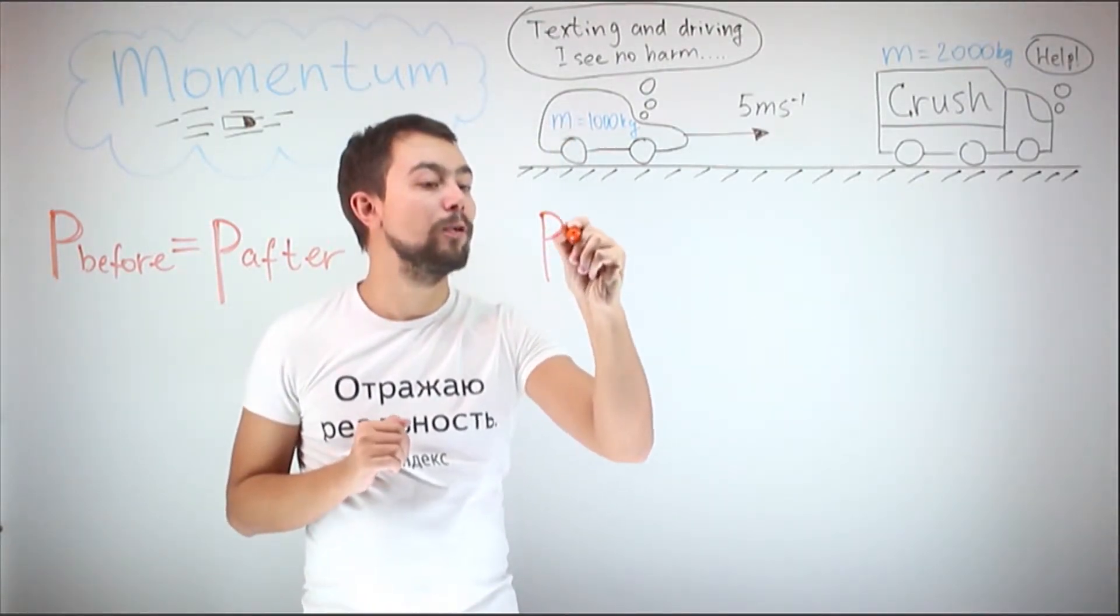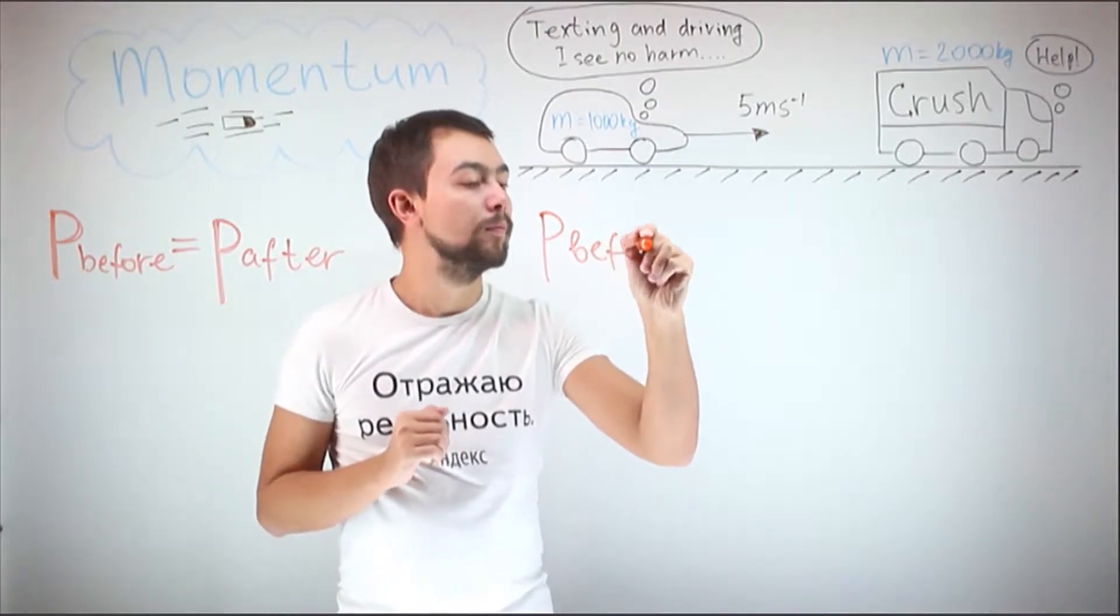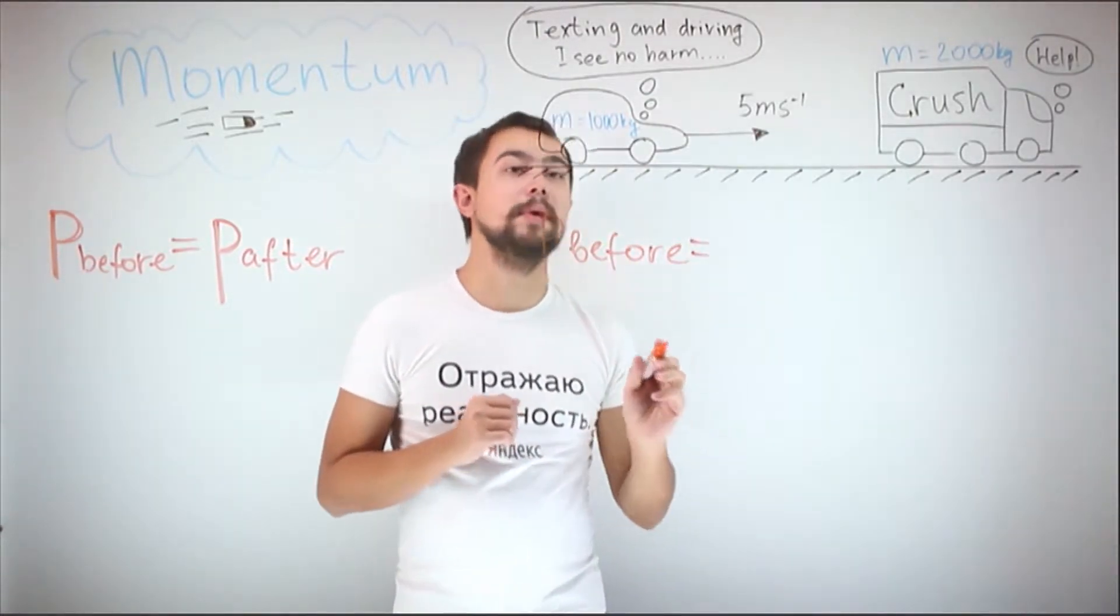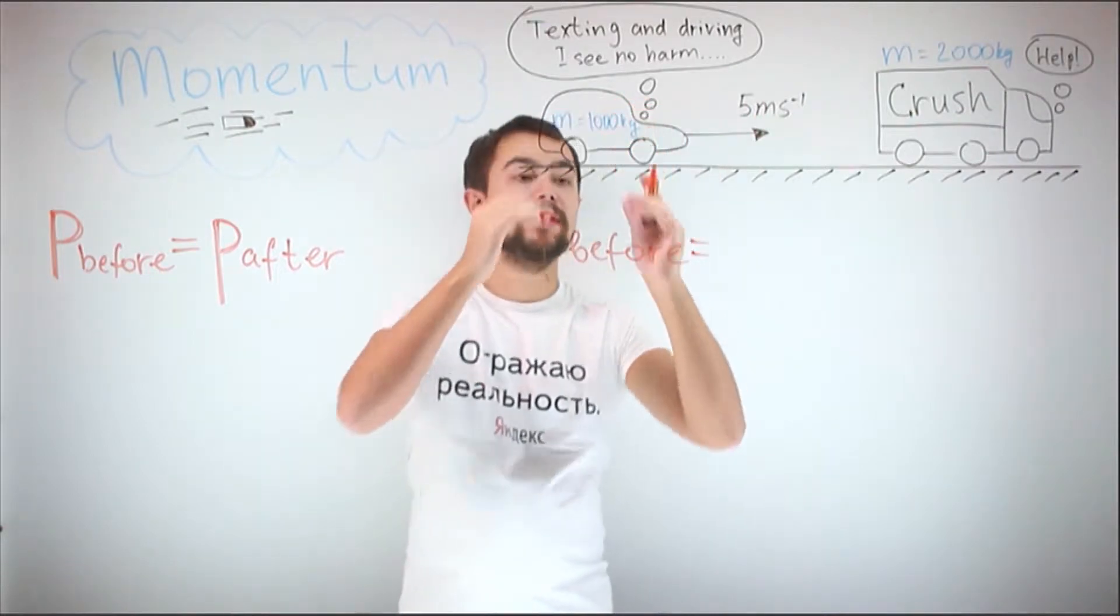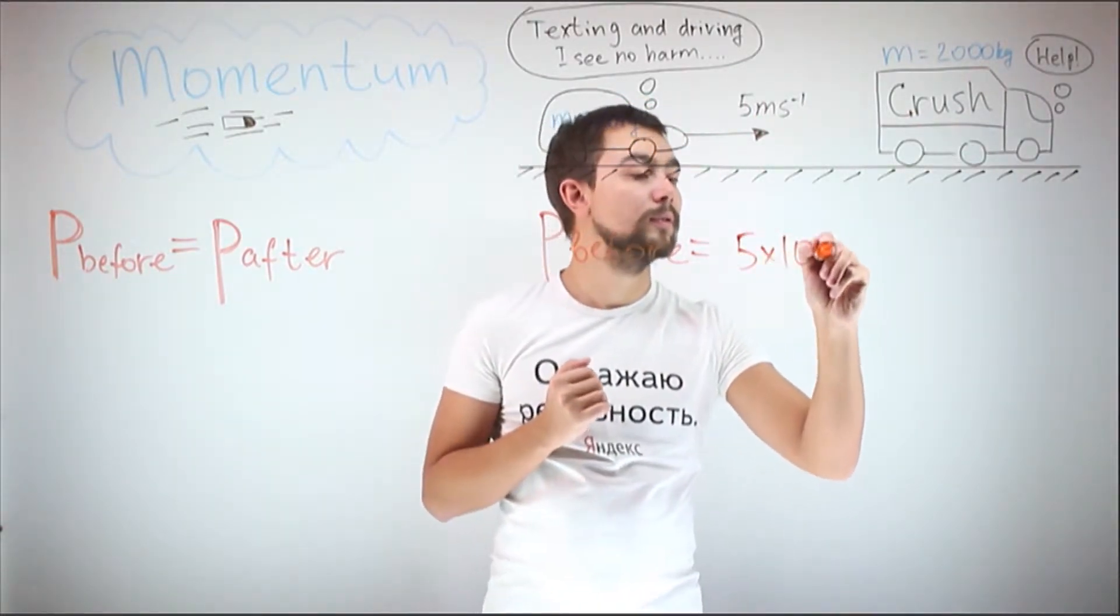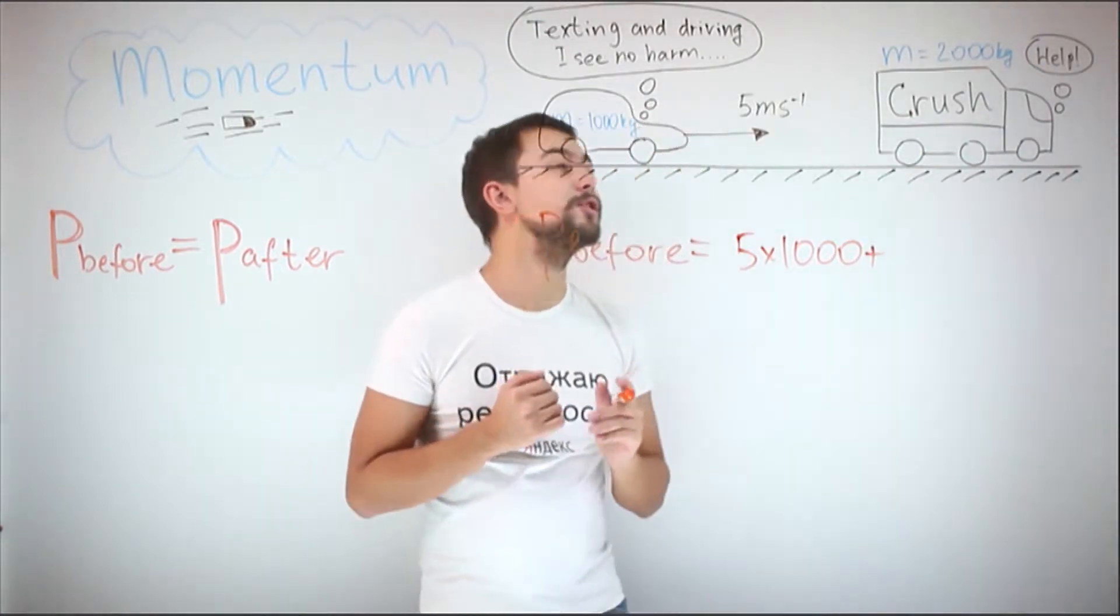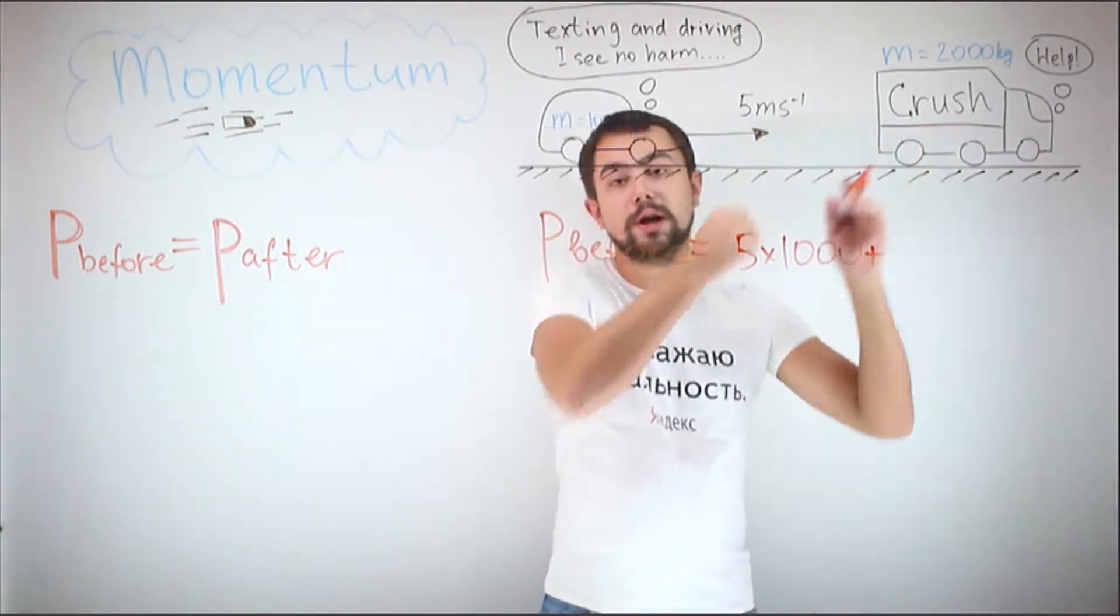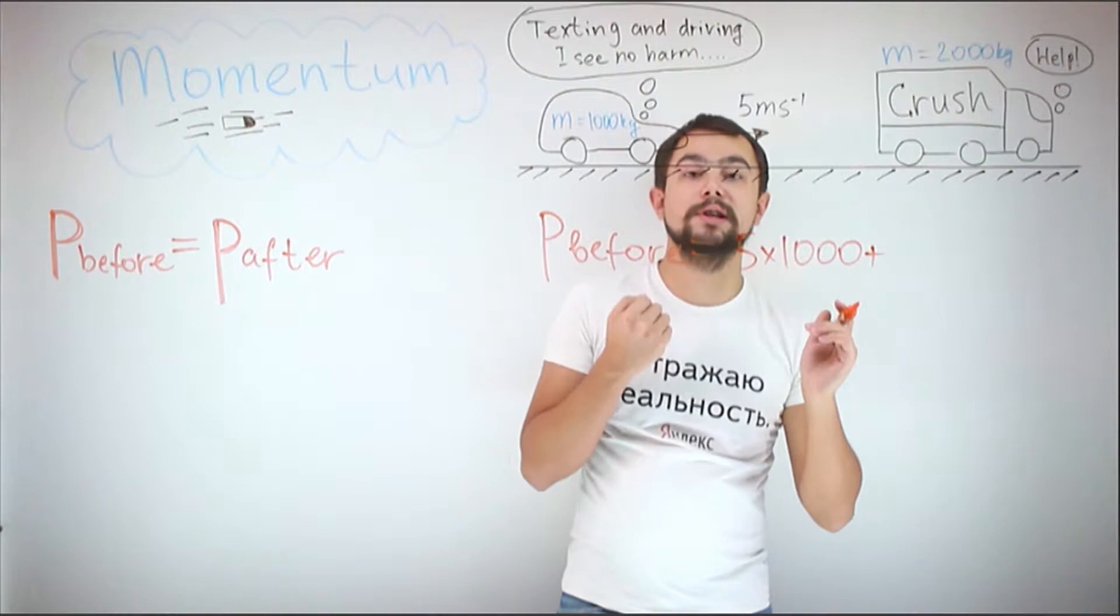Momentum before is equal to the momentum of the car, which is 5 times 1,000, plus the momentum of the truck. But the truck is stationary, so its velocity is 0.